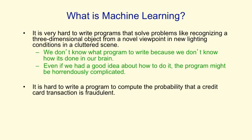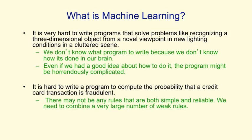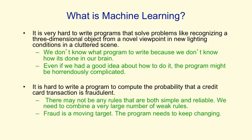Another example is detecting a fraudulent credit card transaction, where there may not be any nice simple rules that will tell you it's fraudulent. You really need to combine a very large number of not very reliable rules. And also, those rules change over time because people change the tricks they use for fraud. So we need a complicated program that combines unreliable rules and that we can change easily.